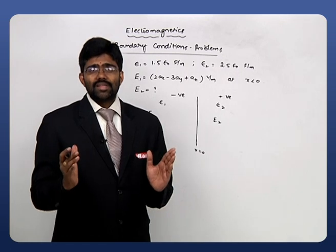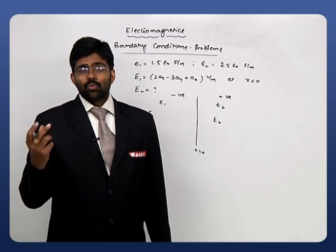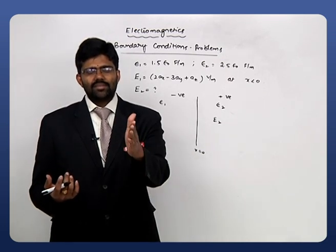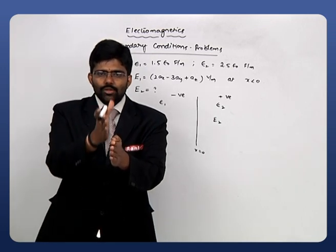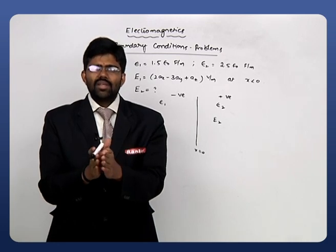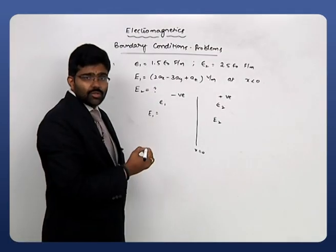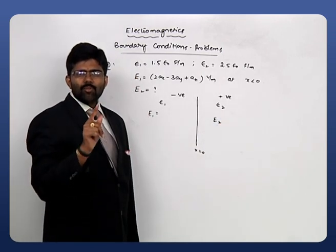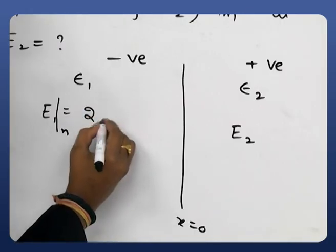We need to decompose the electric field intensity into the tangential component and the normal component, because we have the relation between tangential and normal only — we have no direct relation in x, y, z. For the yz plane, the vector which is normal to it is always x. So for the x=0 plane (the yz plane), any component in the direction of x is the normal component, and all remaining components are tangential. The normal component of E₁ is 2ax.